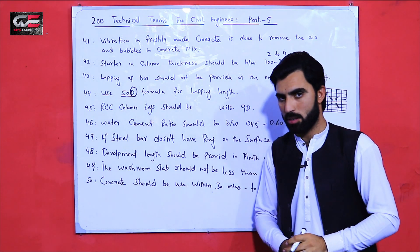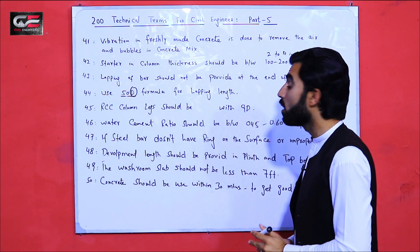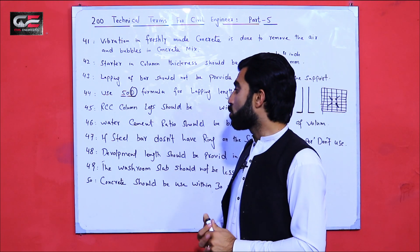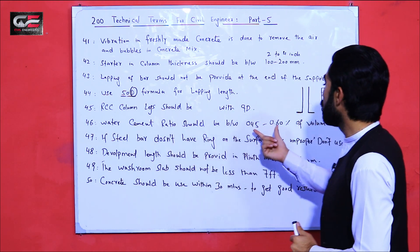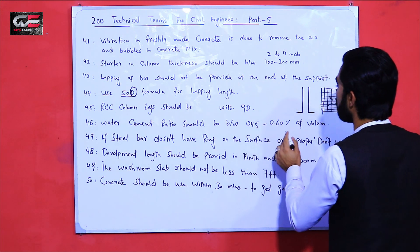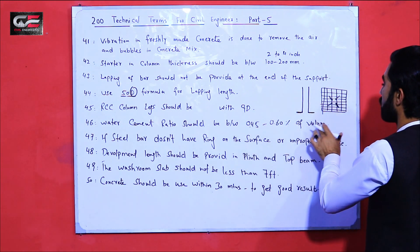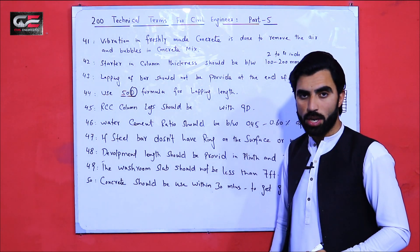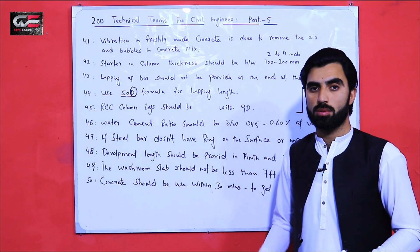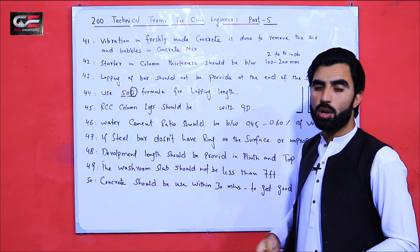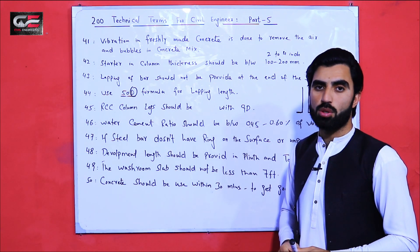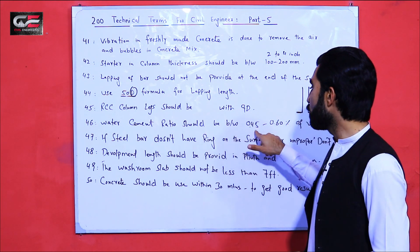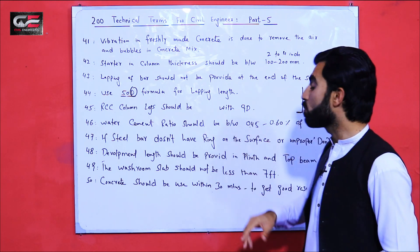Term number 46 is water cement ratio, which should be between 0.45 to 0.6 percent by volume of concrete. The water cement ratio is dependent on the cement type and the different grades of concrete. Generally, the water cement ratio should be between 0.5 to 0.6 percent.